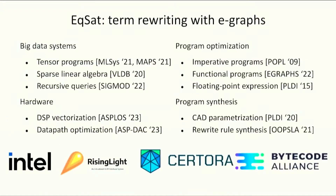Let's first review some background. Equality saturation — the idea of doing term rewriting with eGraphs — has been very successful recently. It has been used in many domains, from big data systems to hardware, from program optimization to program synthesis. It is also getting adopted in industry projects: chip design, database optimization, smart contracts, and WebAssembly.